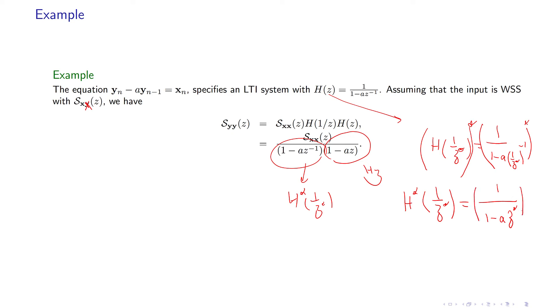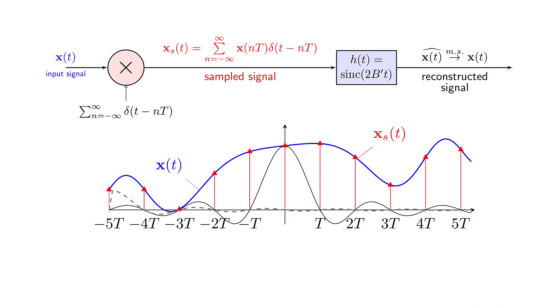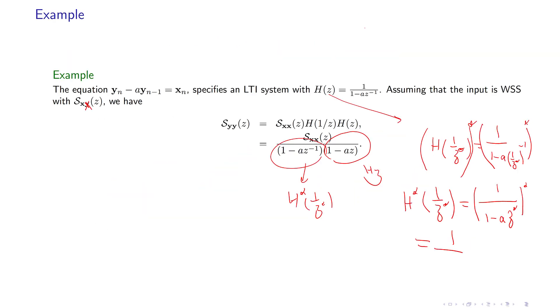And then if I put another conjugate on that, I get 1 over 1 minus a conjugate, a conjugate, z. So this needs to be corrected, so we need to have a conjugate here. So this is the final result.